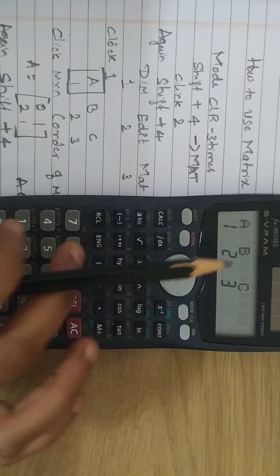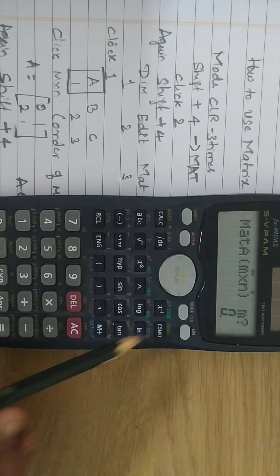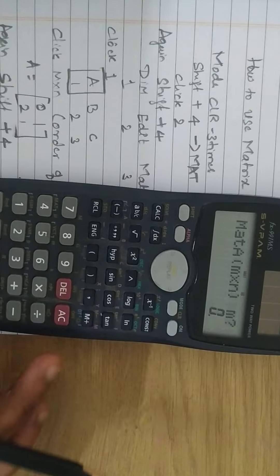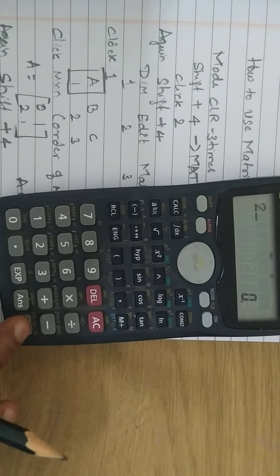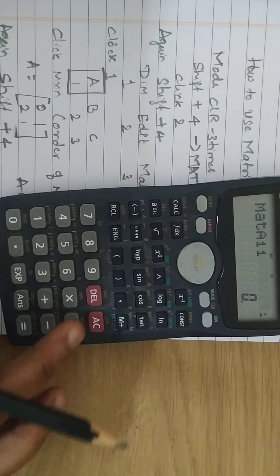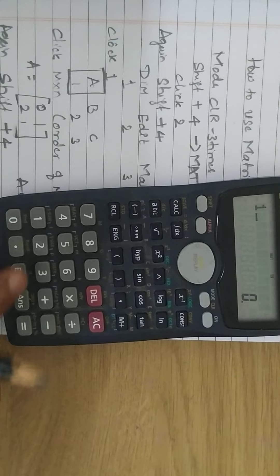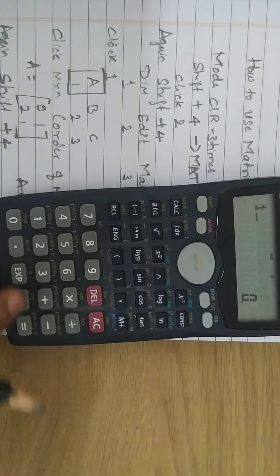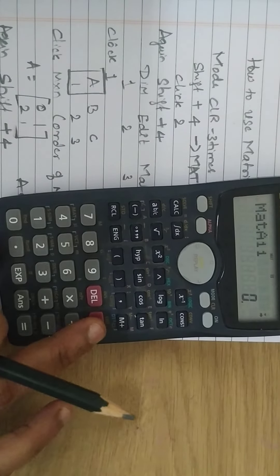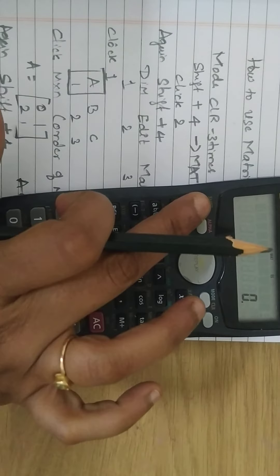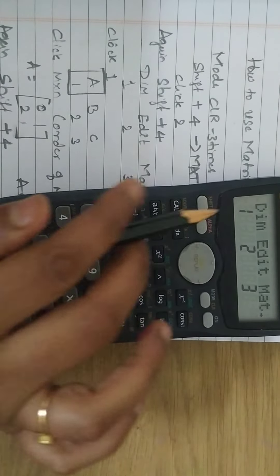Go to dimension matrix A and mention the order: 2 cross 2 or 3 cross 3. Here I'll mention 2 cross 2. Enter the values: 0, 1, 2, 1. Click AC to come out of the matrix. Again, press shift 4 and go to dimension.